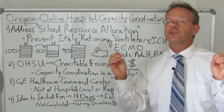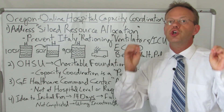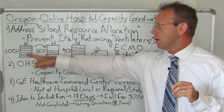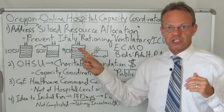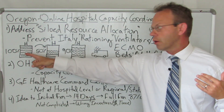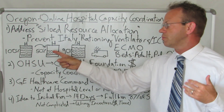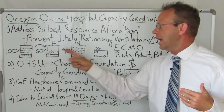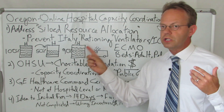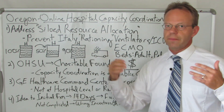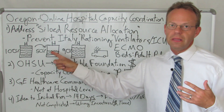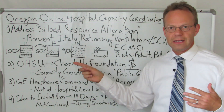Oregon is the first and only state in America to do this. What I've drawn here is an illustration: Hospital 1 might be 100% full, Hospital 2 might be 50% full, and Hospital 3 might be 90% full. So if there's somebody in critical condition, you move them to the hospital in the middle, not the hospital on either end.